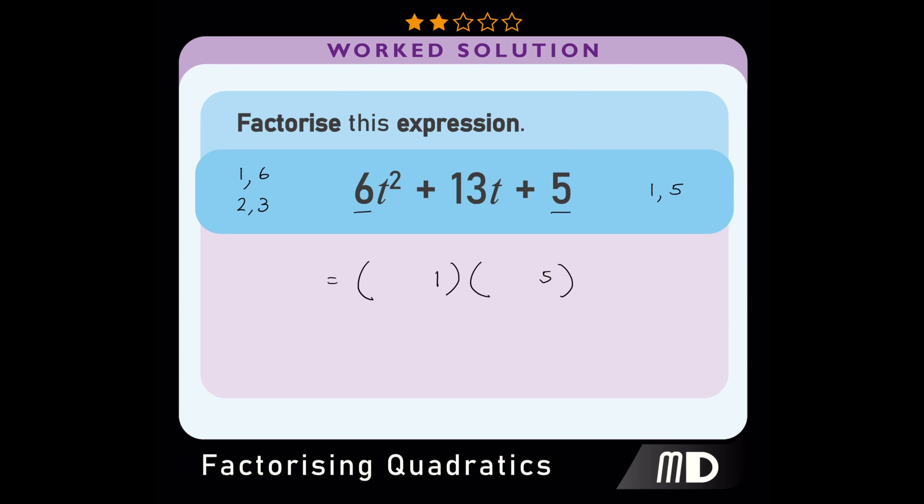Given the way that double brackets are expanded, we need the pair that gives us a sum of 13, when multiplied with 1 and 5. Given that 2 multiplied by 5 gives us 10, and 3 multiplied by 1 gives us 3, and the sum of 10 and 3 is 13, the pair that we use will be 2 and 3.